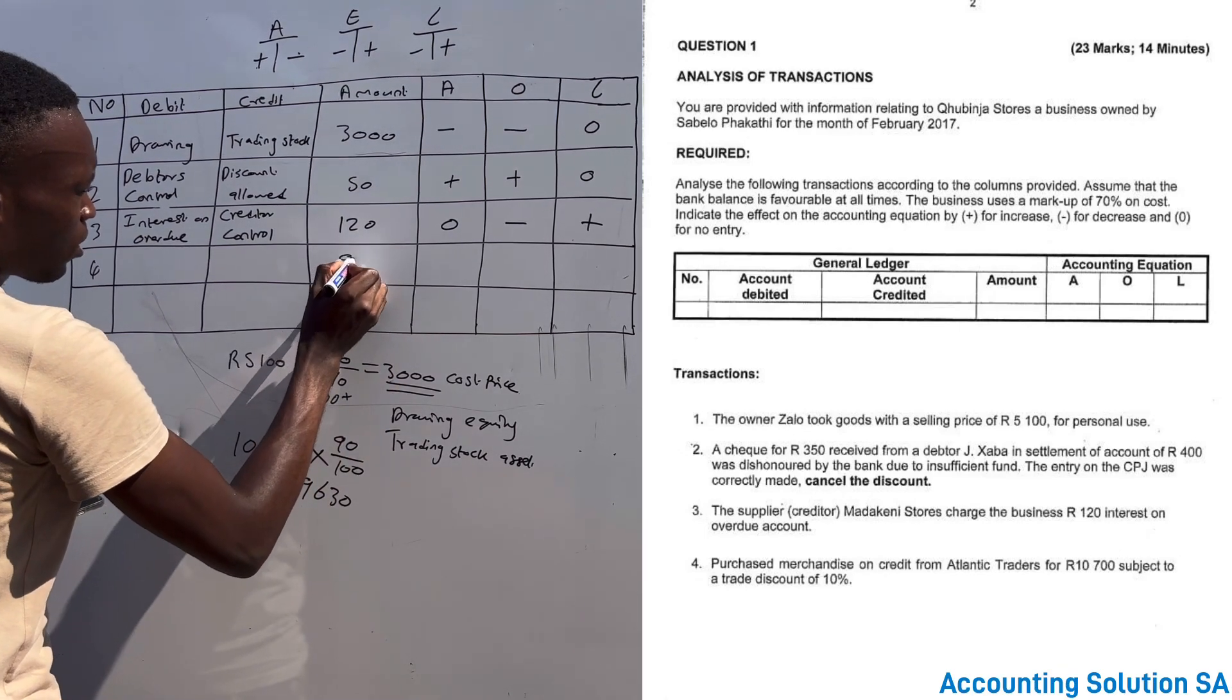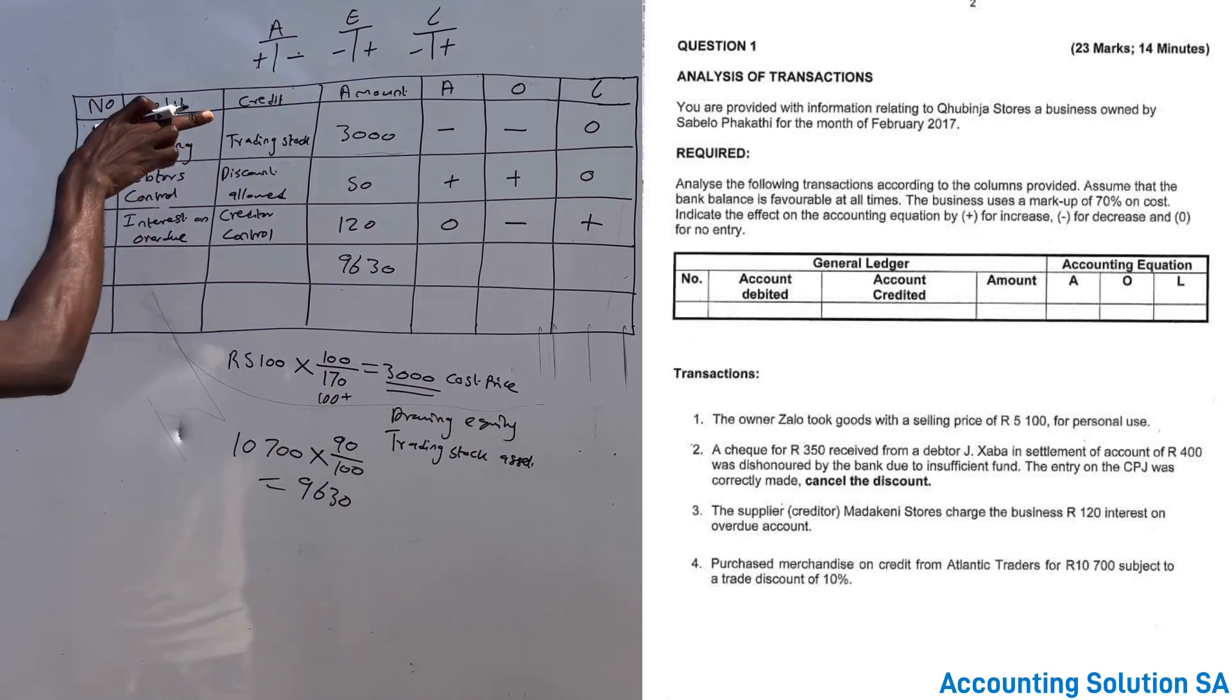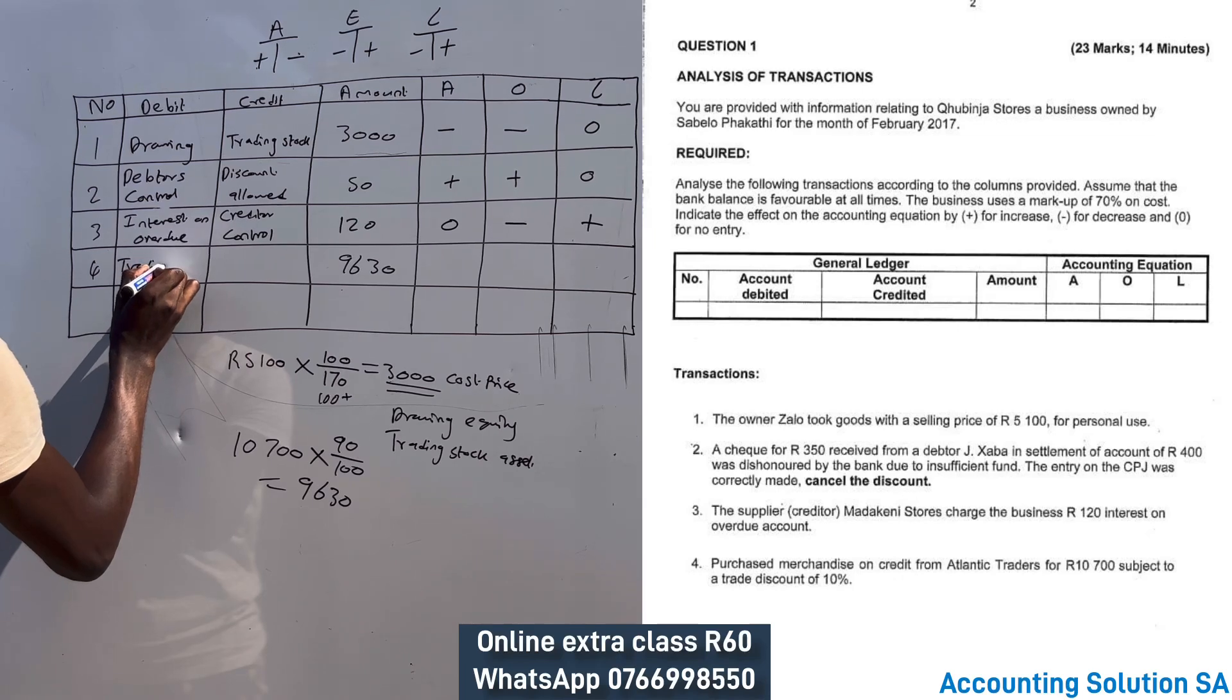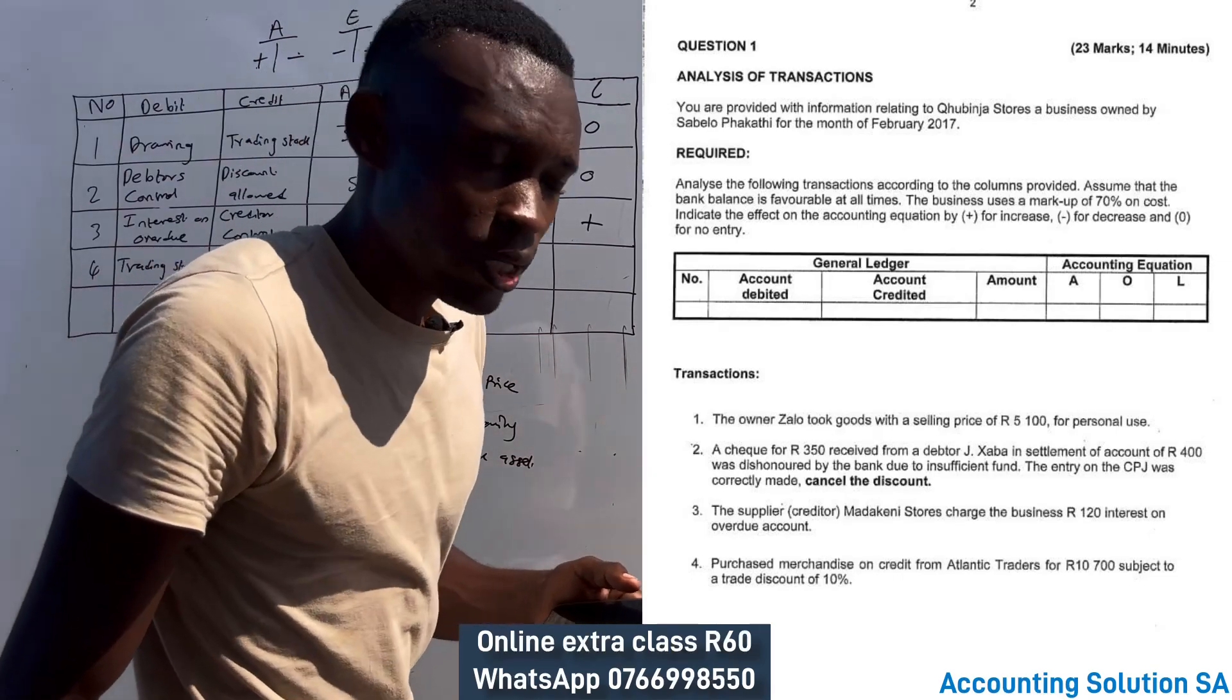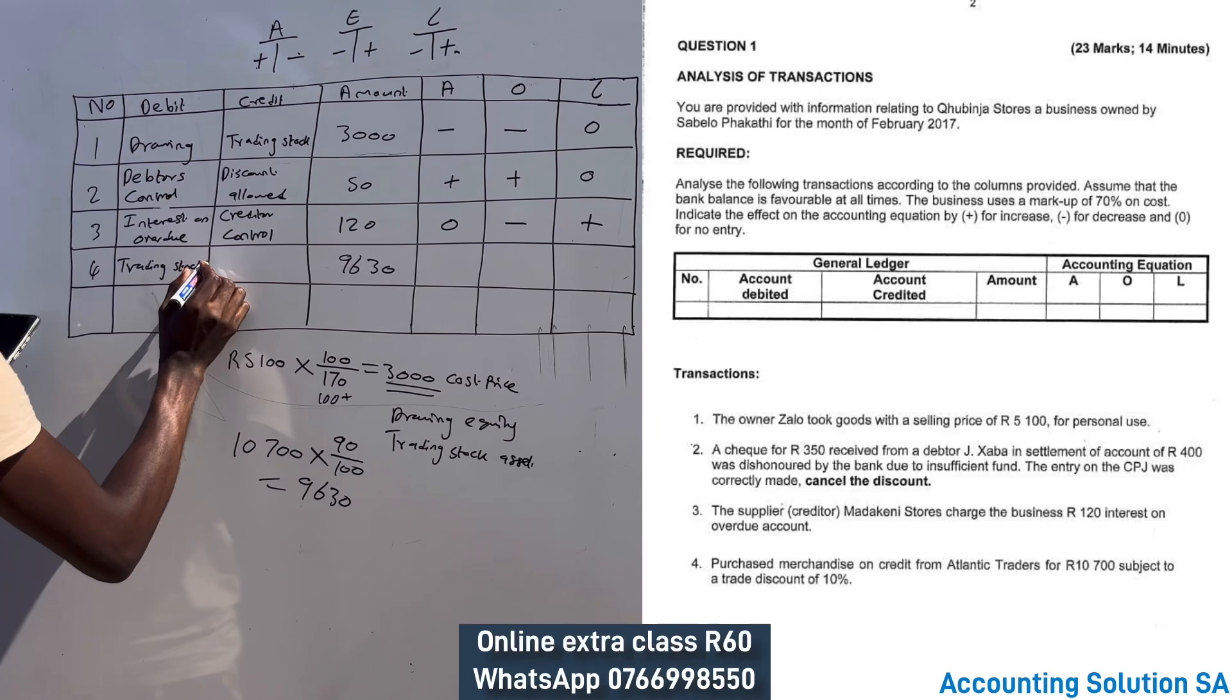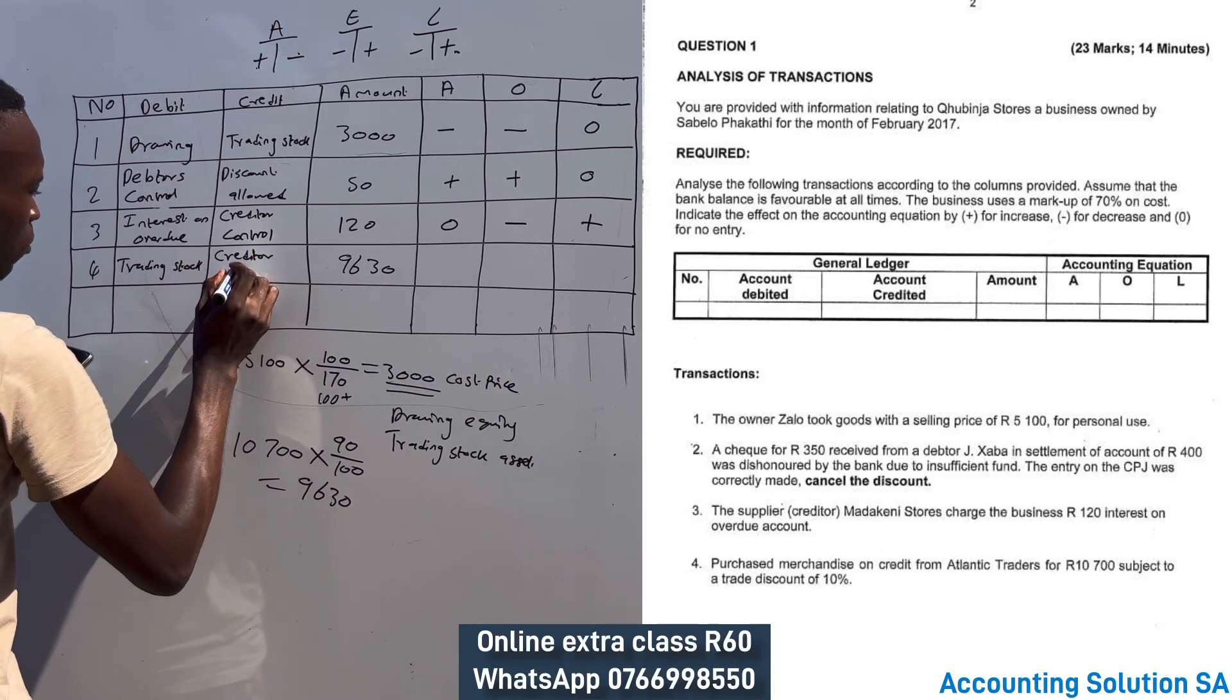9,630. We purchased inventory, our assets increase: trading stock. But this purchase, this inventory that we purchased is going to increase liability because we haven't paid, which means that our liability creditors control is going up. We didn't pay, we purchased on credit.